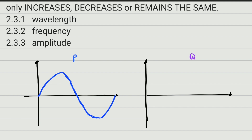Remember, this oscilloscope pattern does not represent the motion of the particles — it represents the oscillation as displayed. For node Q, which has the same frequency but only half the amplitude, we draw the same number of cycles but with the wave only reaching halfway up. So Q has the same wavelength on the graph but smaller amplitude. That is the answer to question 2.1.